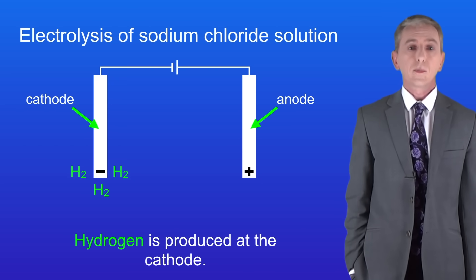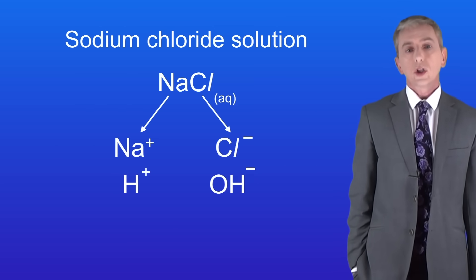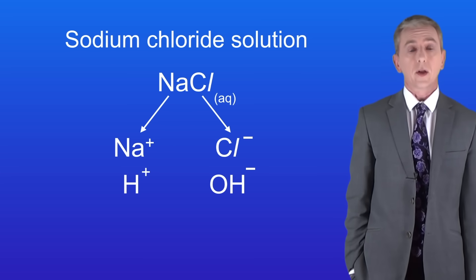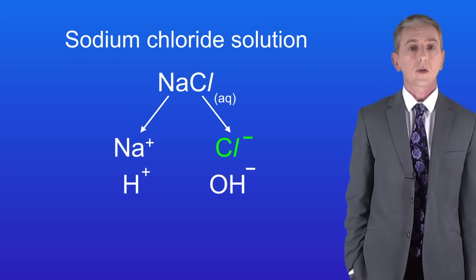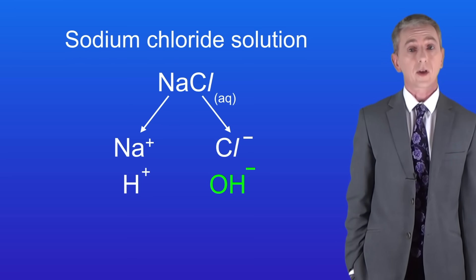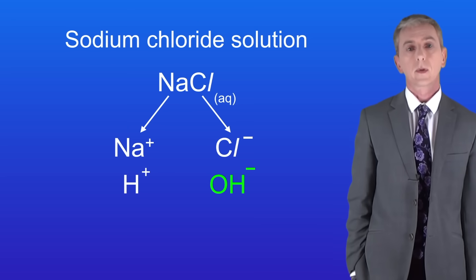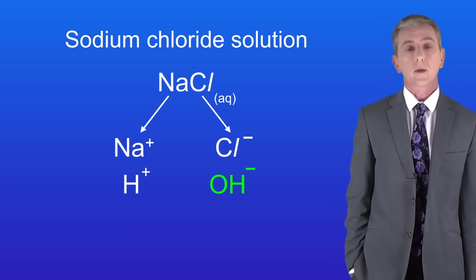So the next question is what will be produced at the anode? Two different ions will be attracted to the anode: the chloride ion Cl- and the hydroxide ion OH-. Now this brings us to an important rule which you need to learn.